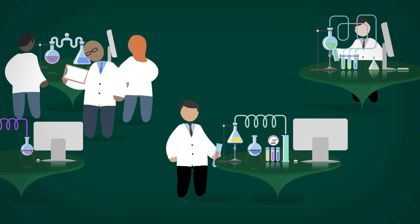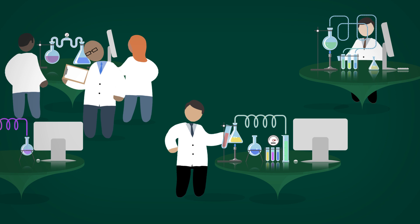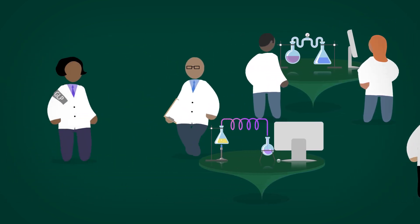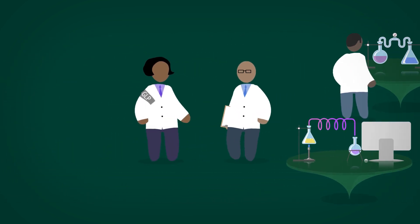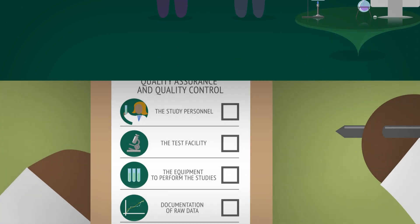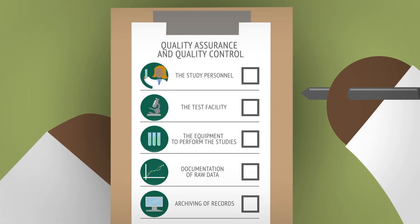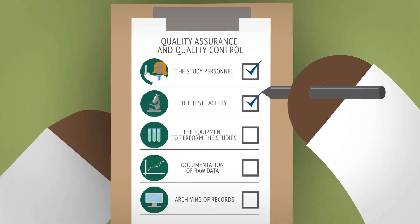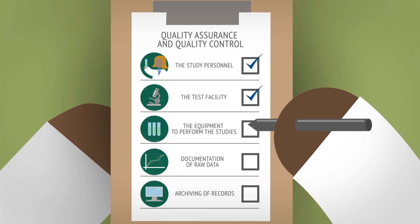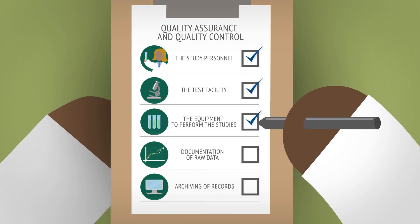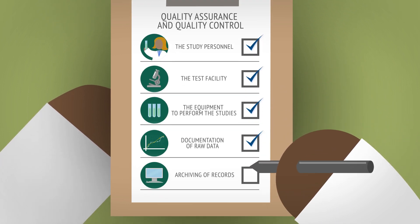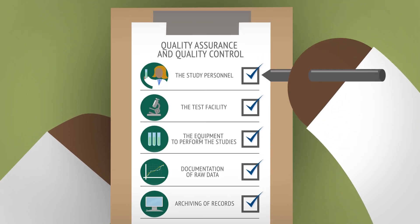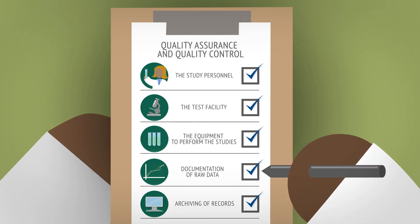In both cases, laboratories are accredited under GLP and are regularly audited by government bodies. In GLP accredited laboratories, testing also undergoes quality assurance and quality control to ensure that all data is recorded, all steps in the testing protocol are strictly followed, and tests are conducted by GLP trained personnel.